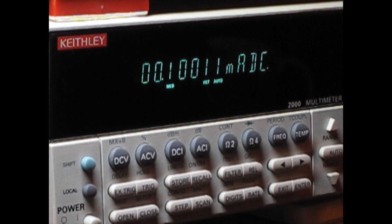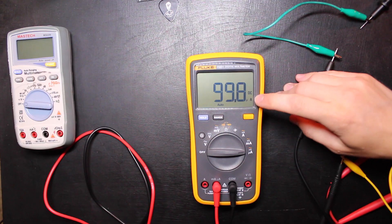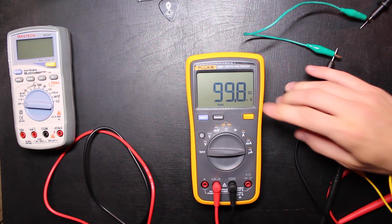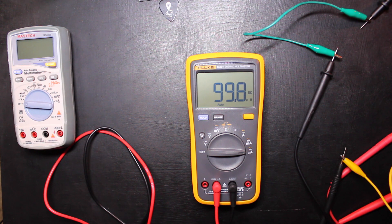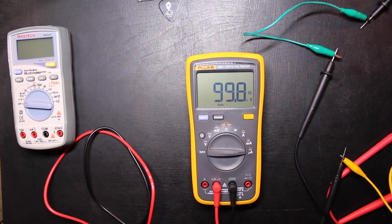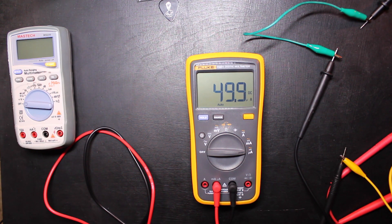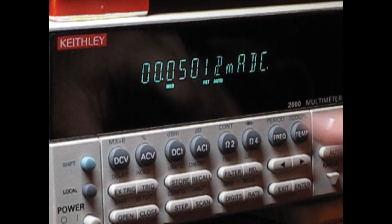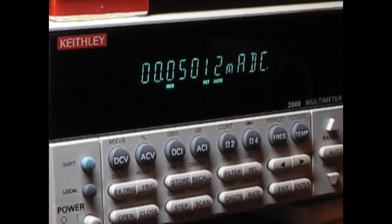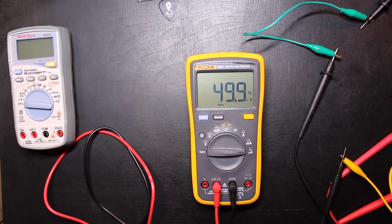So this is 100 microamps—so this is 100.11 microamps and we've got 99.8 microamps here on the Fluke. So let's keep dropping that and see what happens. Okay, so there's 50 microamps, we're getting 50.12 there, 49.9, so that's pretty good.